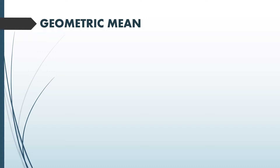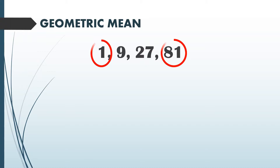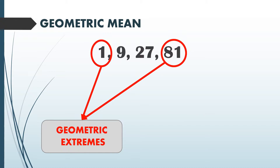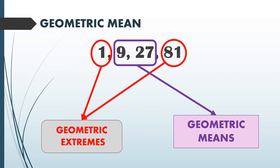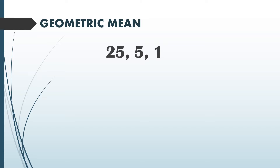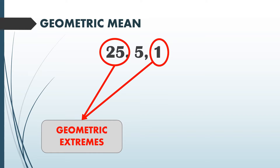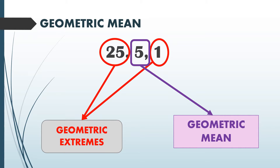The number of geometric means will depend on the number of terms in your finite geometric sequence. So you can have 1, 2, or 3 geometric means. For example, with 1, 9, 27, and 81, the geometric extremes are 1 and 81, and 9 and 27 are the geometric means — so we have 2 geometric means since we have only 4 terms. For 25, 5, and 1, the geometric extremes are 25 and 1, and 5 is the geometric mean — so we only have 1 geometric mean.